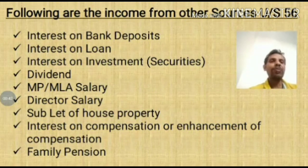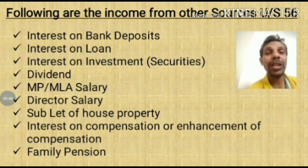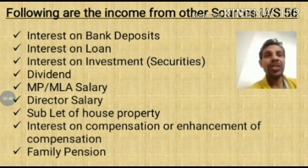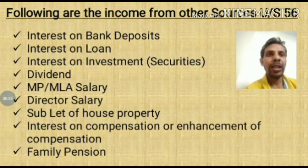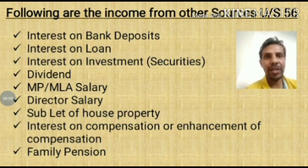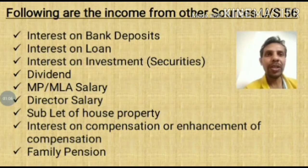These are the incomes taken under the calculation of taxable income from other sources. The first one is interest on bank deposits. When the assessee deposits in the bank in the form of FD, RD, etc., they receive interest. That interest is income to them, which is not related to the first four heads — salary, house property, business and profession, and capital gains — so it comes under other sources.